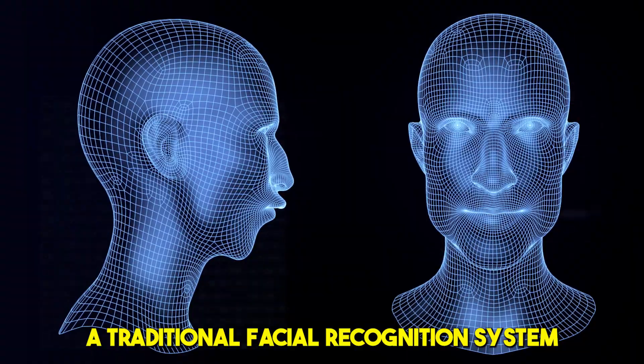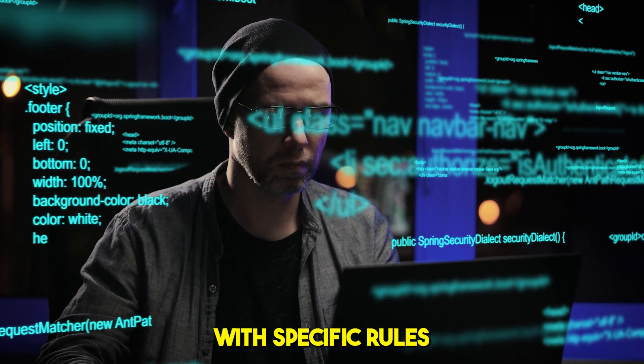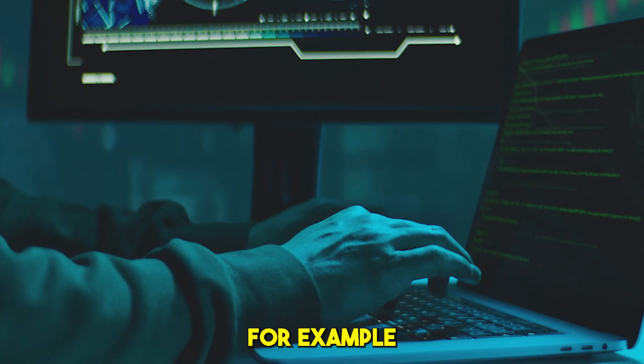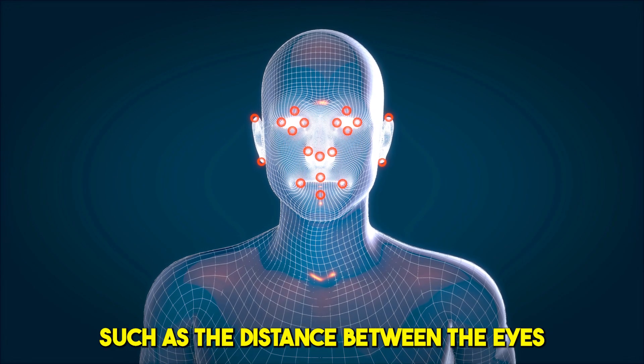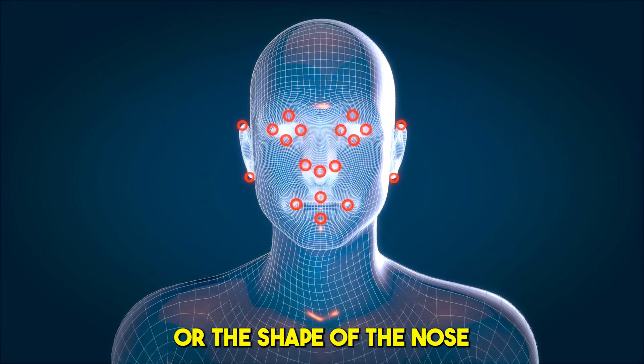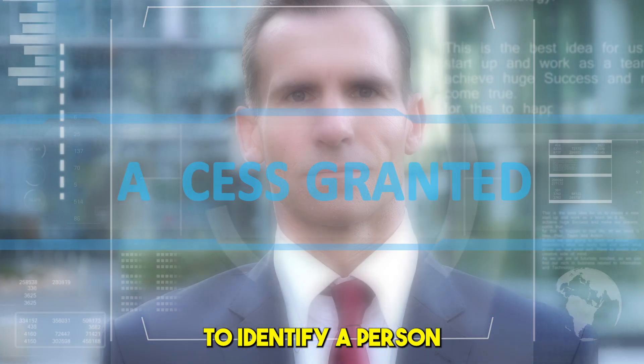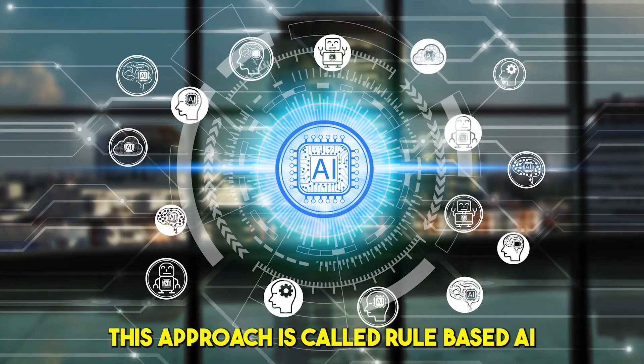A traditional facial recognition system would be programmed with specific rules that it would use to identify faces. For example, it might be programmed to recognize certain facial features such as the distance between the eyes or the shape of the nose, and use those features to identify a person. This approach is called rule-based AI.